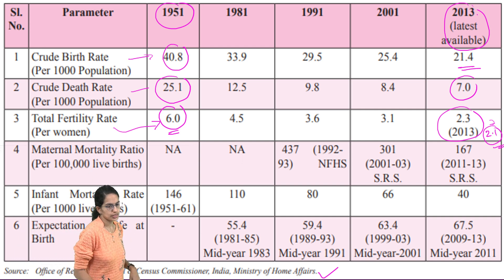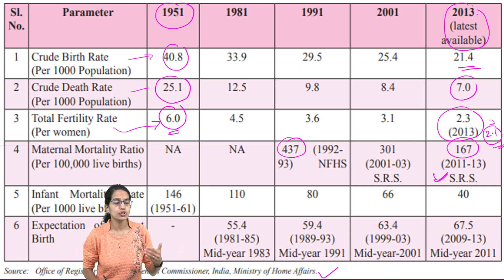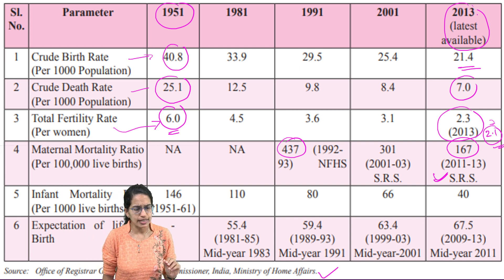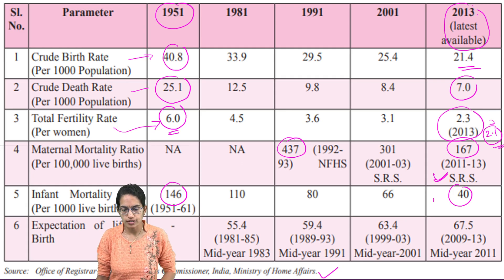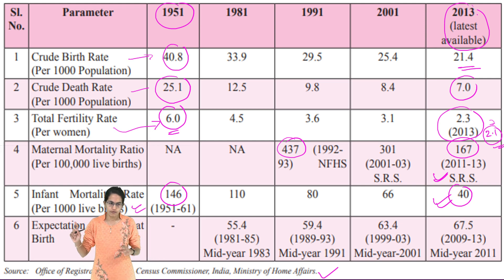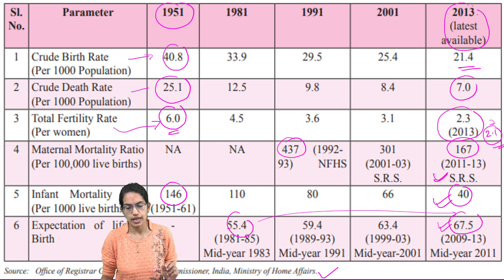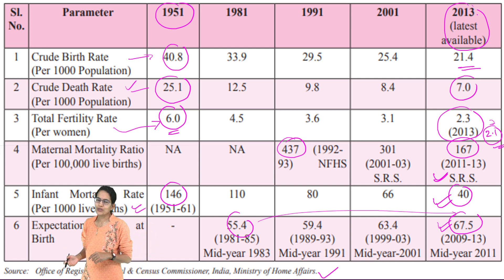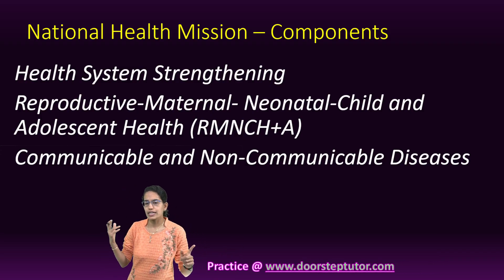Maternal Mortality was around 437 and has been reduced to 167 per lakh population as per the Sample Registrar Survey — a significantly good figure. Infant Mortality reduced from 146 to 40, with the target of 25 still to be reached. Life expectancy increased from 55 to 67 years, which aligns with the reduction in the Crude Death Rate, showing improved longevity.